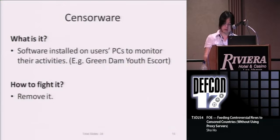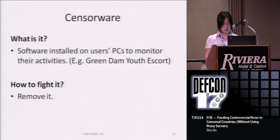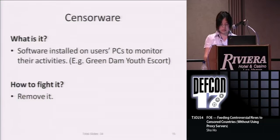A few months ago, the Chinese government tried to force all PC makers to pre-install a software on all the PCs they sell. The software is called Green Dam. It is basically censor ware, potentially capable of performing all the censorship work and much more. Luckily, the Chinese government backed down at the last minute due to public outcry. The best way to fight censor ware is to remove it — software that removes Green Dam was widely available a few days after Green Dam was released.